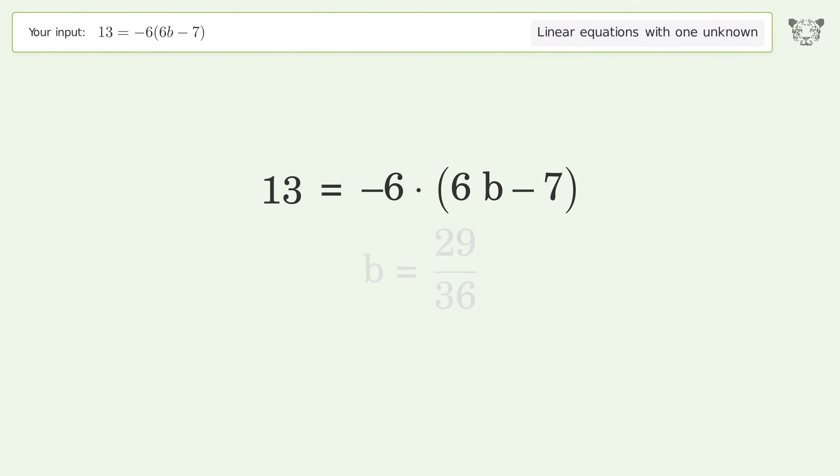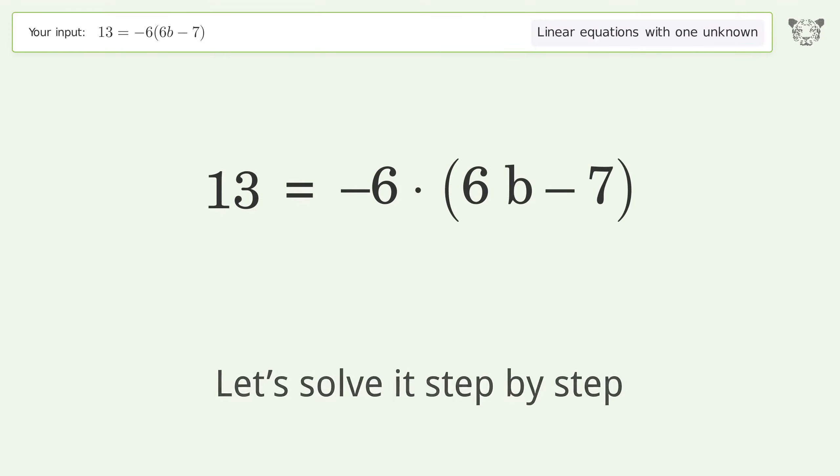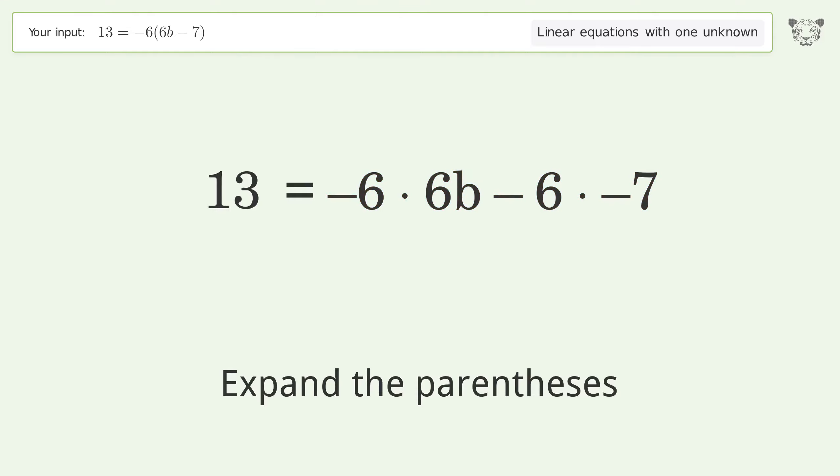You asked to solve this linear equation with one unknown. The final result is b equals 29 over 36. Let's solve it step by step. Simplify the expression, expand the parentheses.